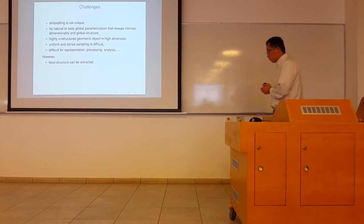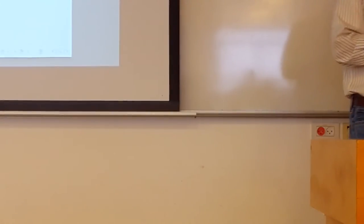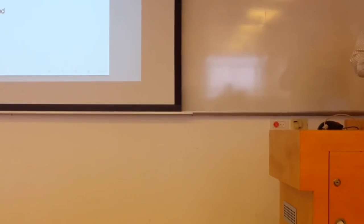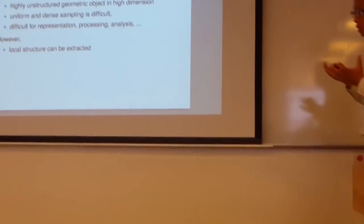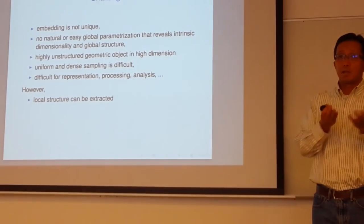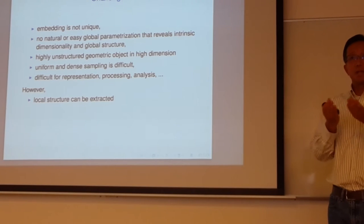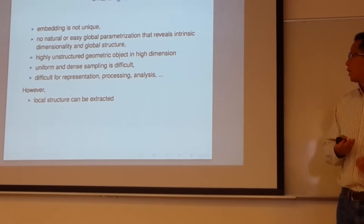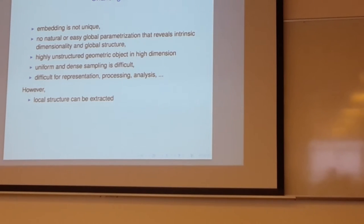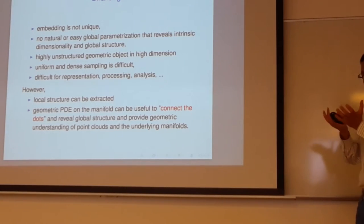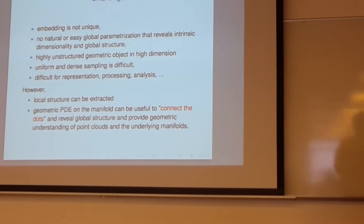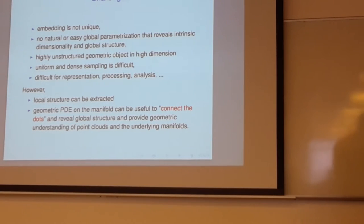However, local structure can still be constructed. Any smooth surface locally is essentially a graph. The tangent space is a good way to parametrize local geometry. So you have a local linear representation — this graph becomes a function space, a linear space — and that can be extracted. The question is: how do you connect the dots? You have some local description of local geometry, but how do you piece these local descriptions together in order to get a more global characterization?